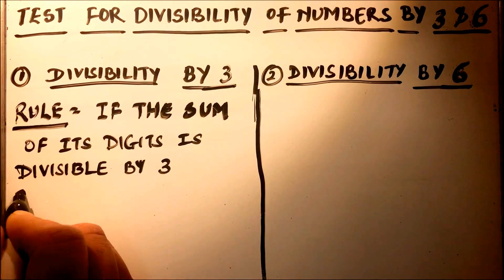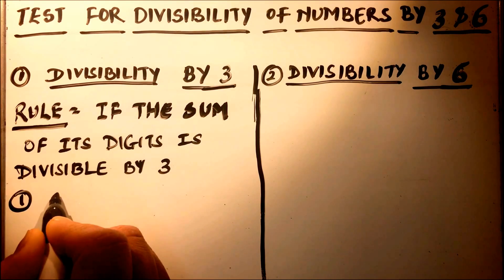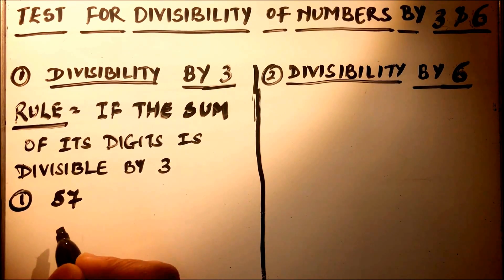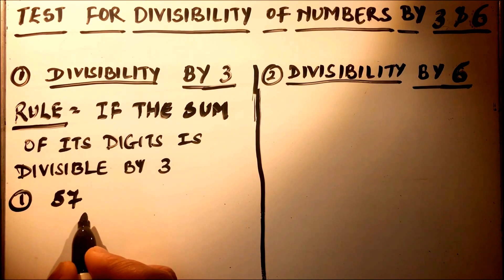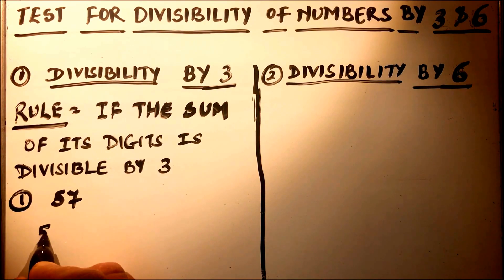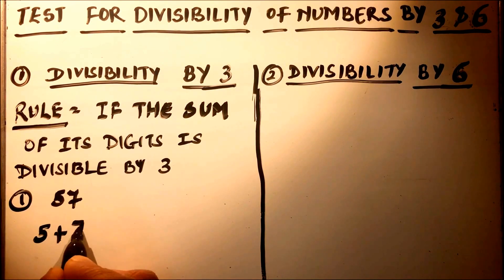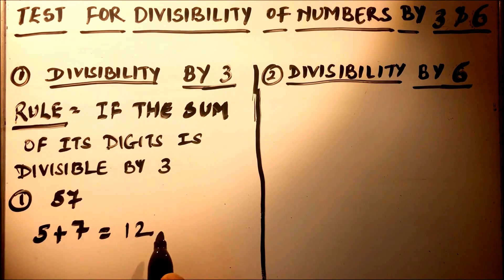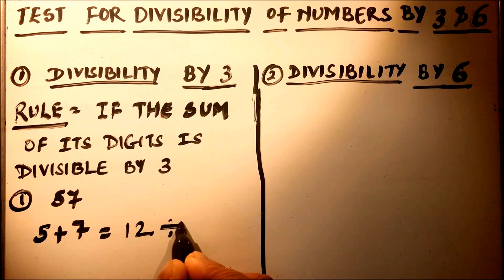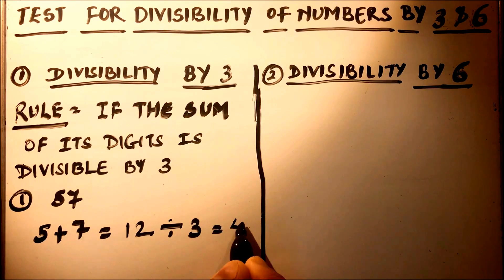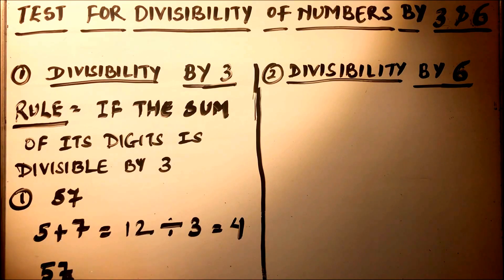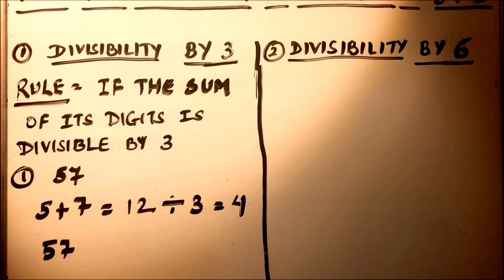Let's take an example. Let's take the number 57. We need to check whether 57 is divisible by 3 or not. We'll add the two digits: 5 and 7, so we get 12. We know that 12 is divisible by 3, so 57 is divisible by 3.